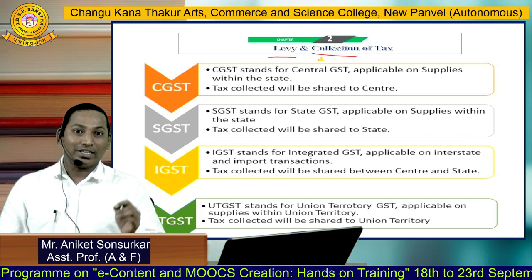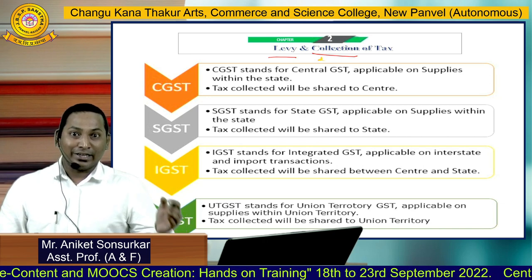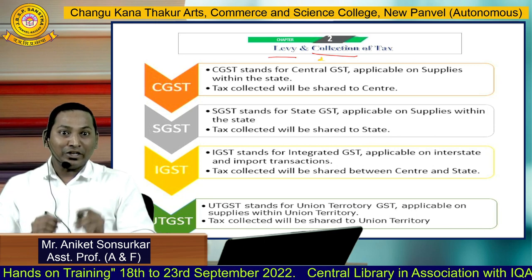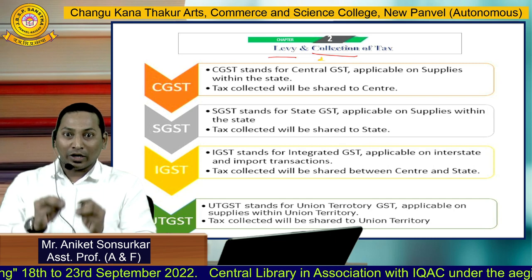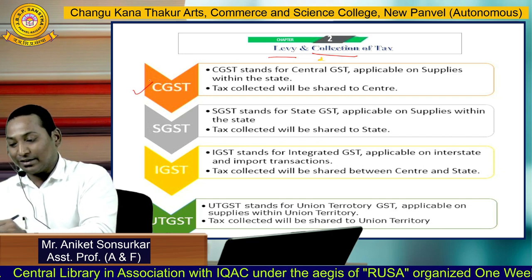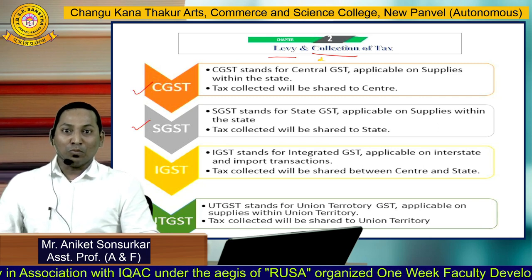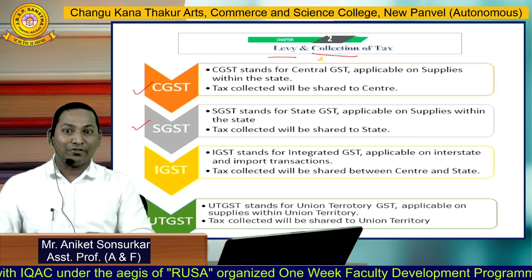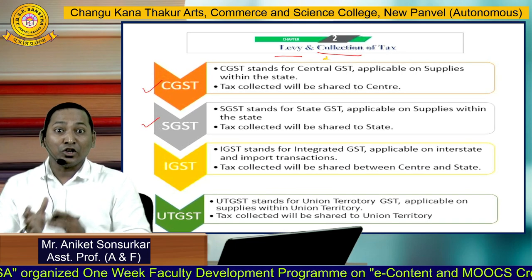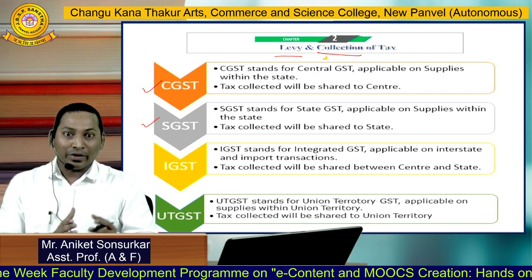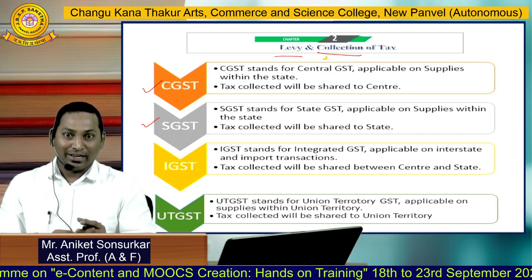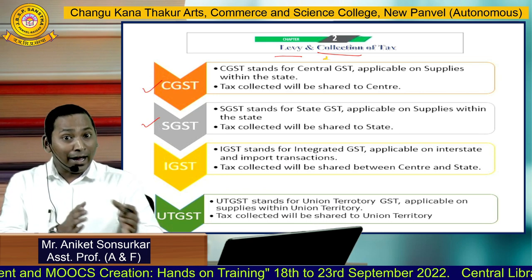The next important structure is IGST, which stands for Integrated Goods and Service Tax, applied on interstate transactions as well as import of goods and services. The tax collected under IGST is shared between the center and the state. The last structure is UTGST, which stands for Union Territory Goods and Service Tax, applicable on supplies within Union Territories. That tax is collected and shared among the Union Territories.